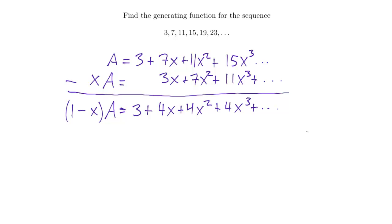Can I simplify this? The 4x plus 4x squared plus 4x cubed continuing forever looks like the generating function for the sequence 0, 4, 4, 4, 4, 4. A constant sequence is something over 1 minus x. To get the 4s I multiply by 4, and to shift so the first term is 4x rather than 4, I also multiply by x. So this whole infinite polynomial simplifies to 4x over (1 minus x).